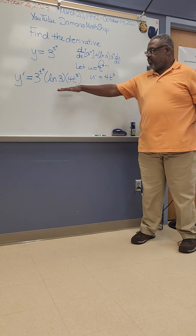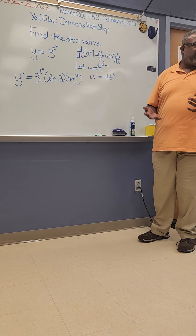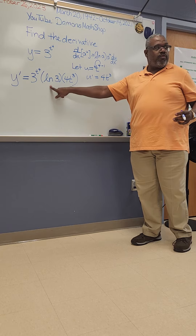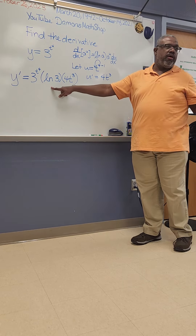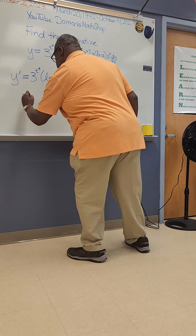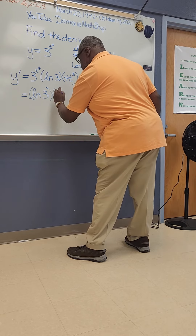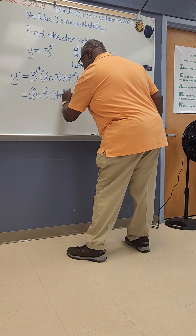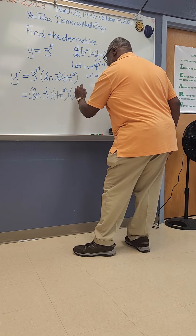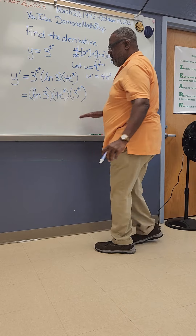And so this is my derivative. I'm going to clean it up — remember that the natural log of 3 is just a number you can look up on your calculator. So reordering the terms: the natural log of 3 times 4t to the 3rd power times 3 to the t to the 4th power. And this is my derivative.